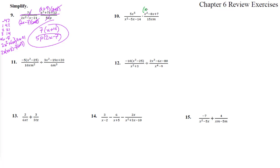Number 10 — the top is already factored. This one factors as x minus 7 times x minus 1 with leading coefficient 1. This one we multiply to negative 14 and add to negative 5, which gives 7 and 2, so that factors as x minus 7 times x plus 2.